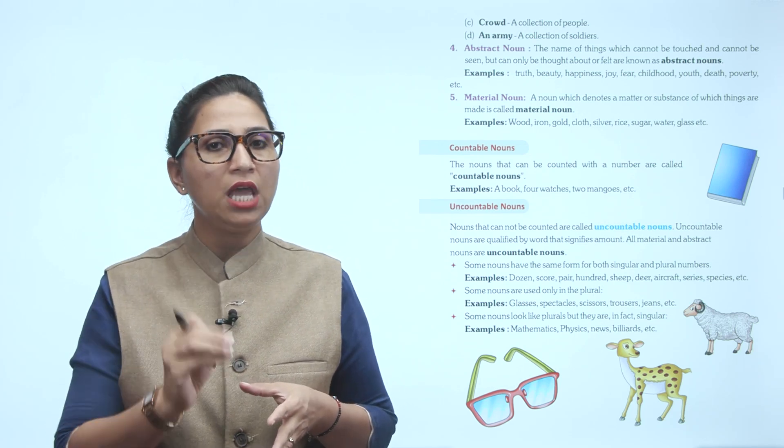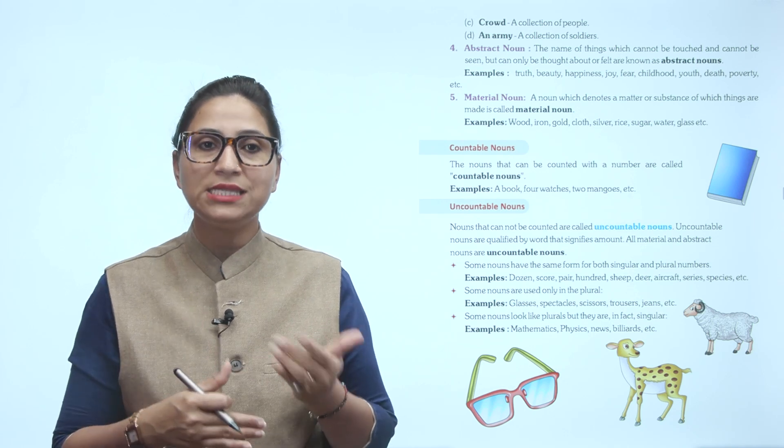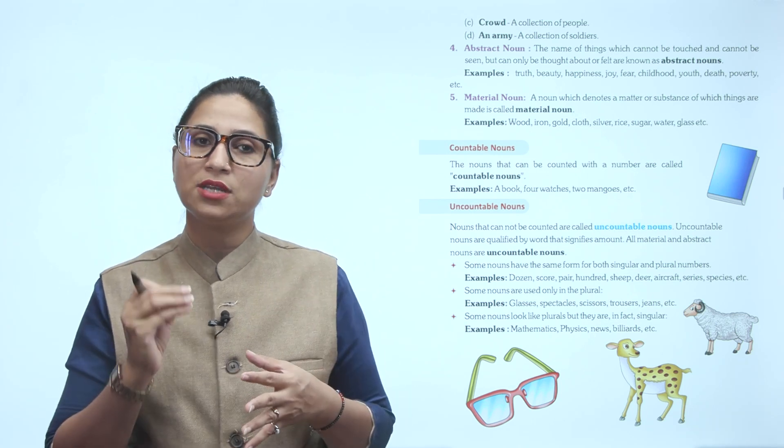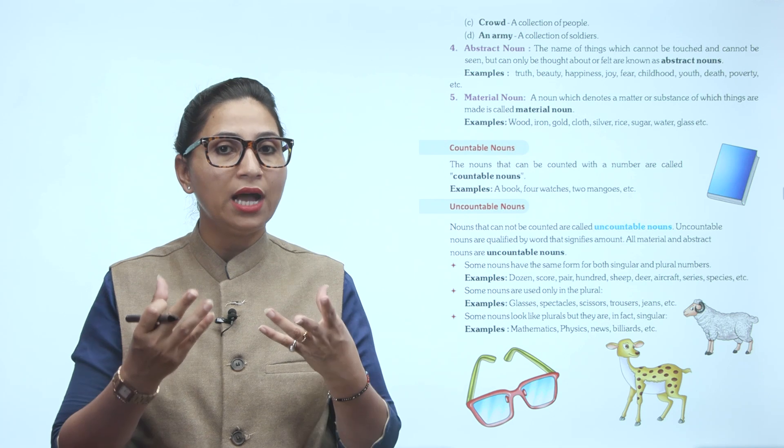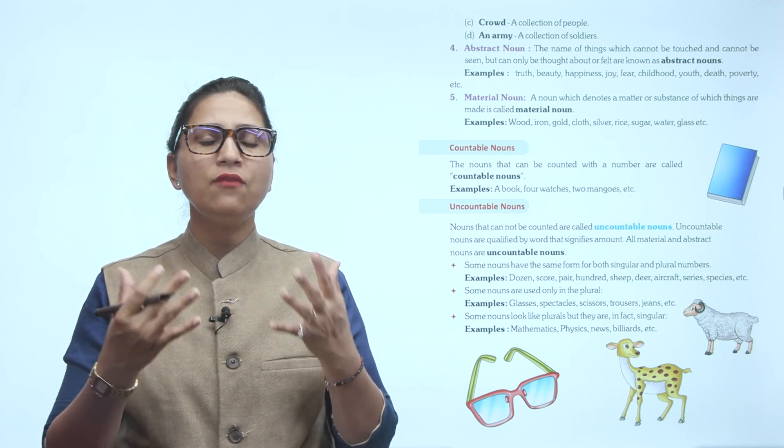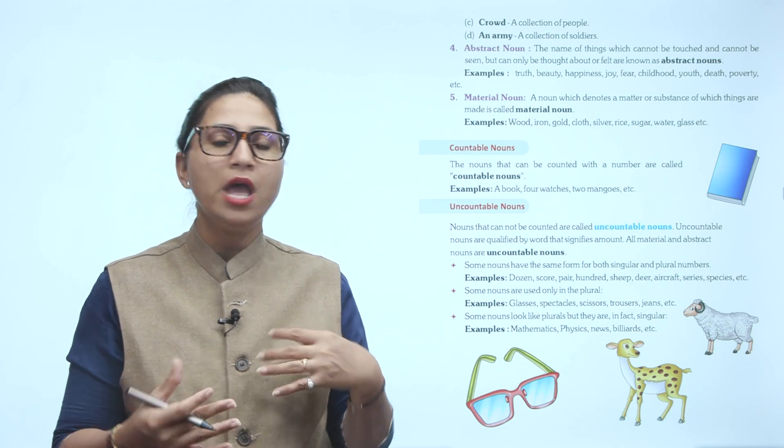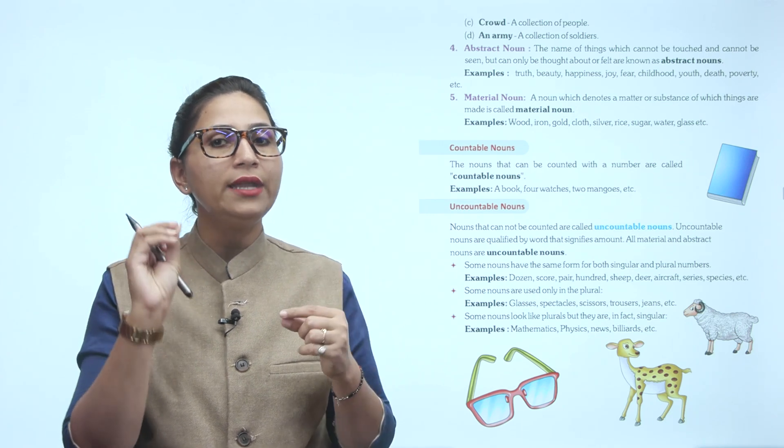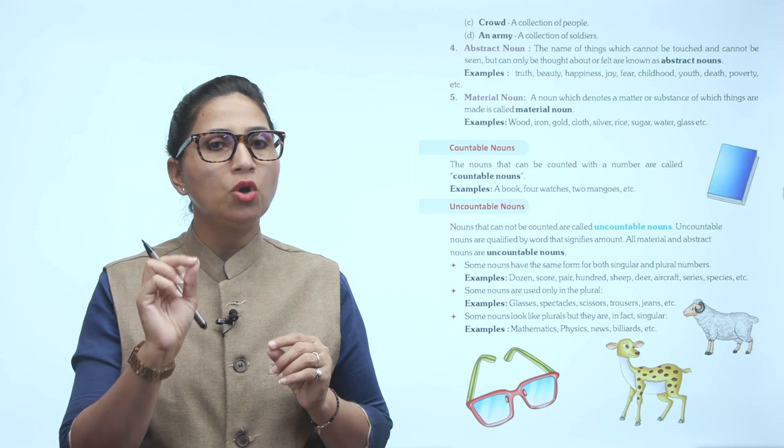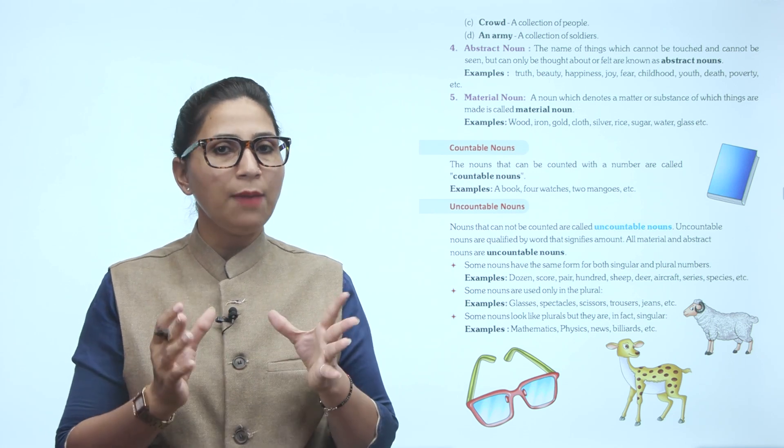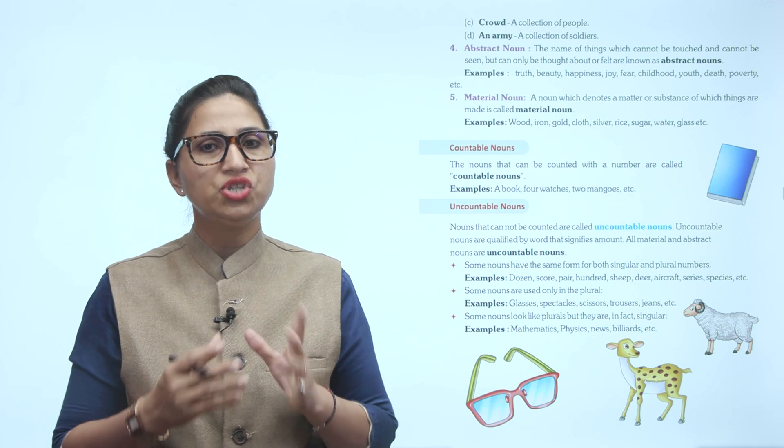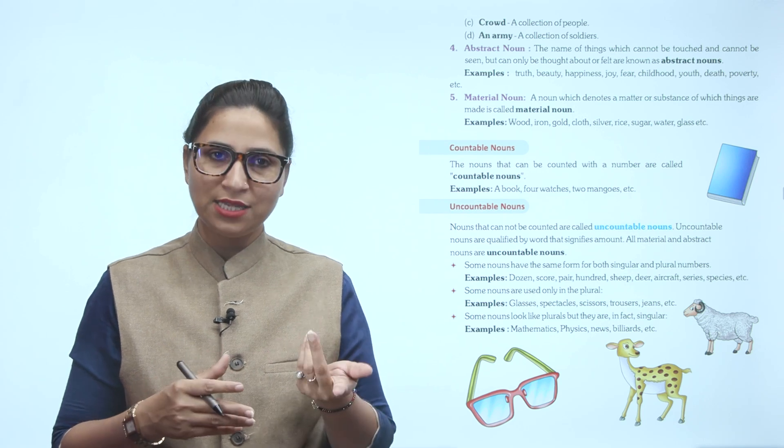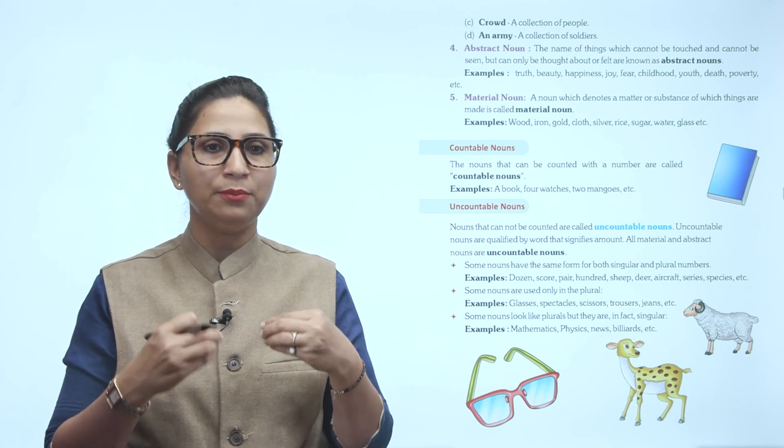Next is abstract noun. The names of things which cannot be touched or seen but can only be thought about or felt are known as abstract nouns. Examples: truth, beauty, happiness, joy, fear, childhood, youth, death, poverty. Can you touch them? No, we can only feel them.